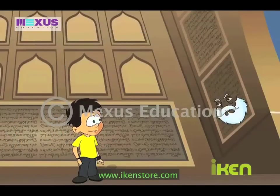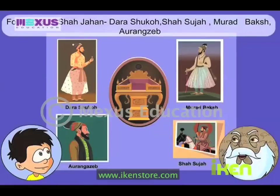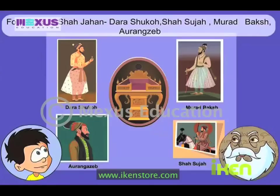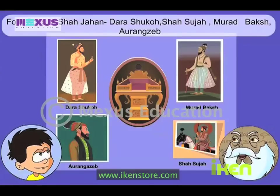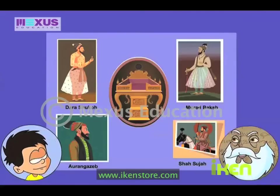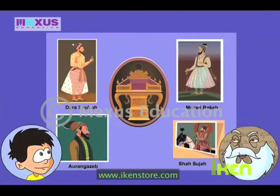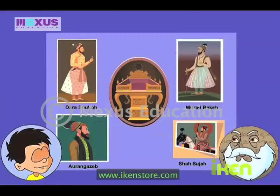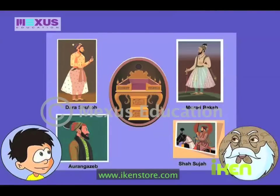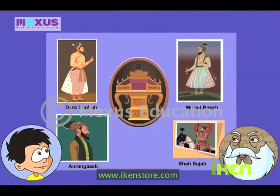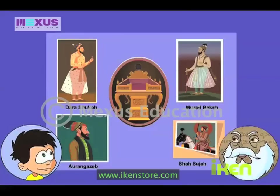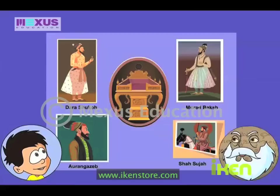I will tell you about the most brutal episode of Mughal history. Shah Jahan had four sons: Dara Shukoh, Shah Shuja, Murad Baksh, and the youngest — Aurangzeb. Shah Jahan fell ill in 1657 and a conflict started between his four sons. A series of bloodbaths followed. Aurangzeb was victorious — he killed his three brothers and ascended the throne. Such cruelty!